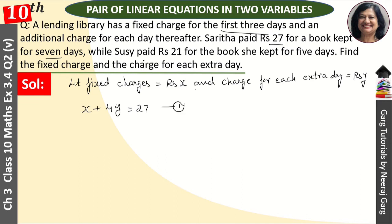She paid rupees 21 for the book she kept for 5 days. So 3 days fixed charges, X plus, 5 minus 3 is 2, X plus 2Y, that is equal to 21. This is our second equation.